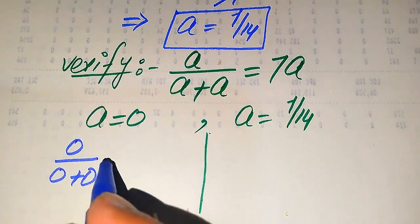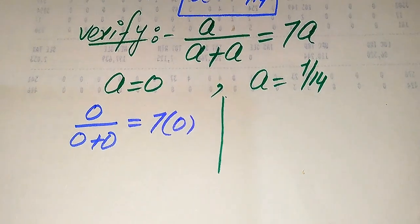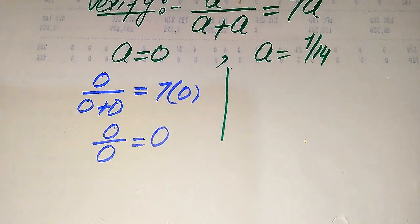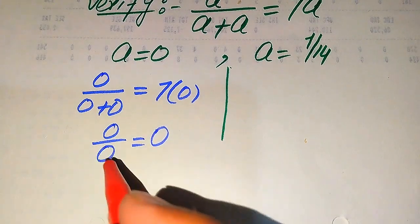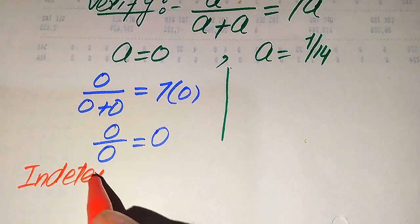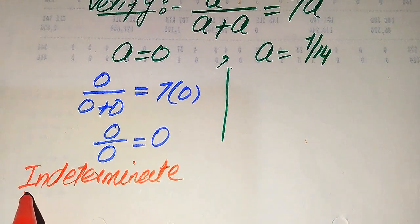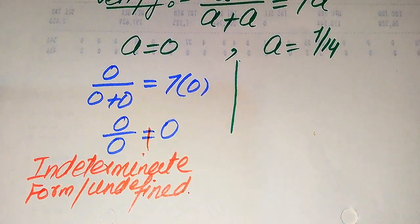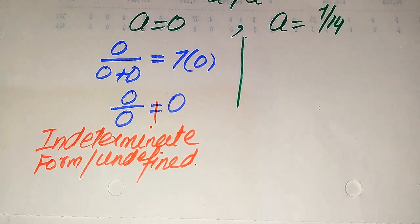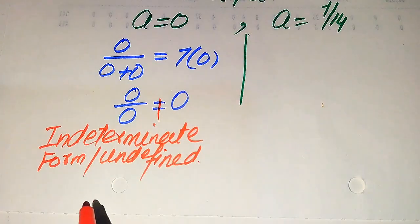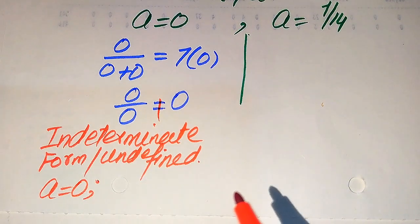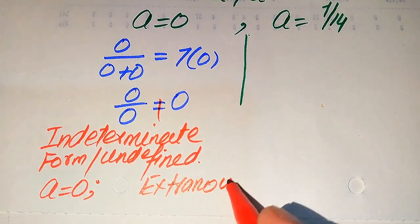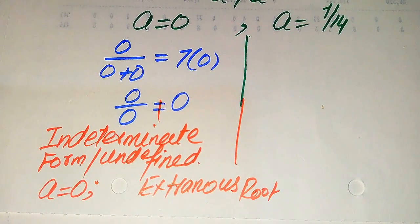Substituting a equals zero, we get zero divided by zero plus zero equals seven times zero, giving us 0/0 equals 0. This 0/0 form is called the indeterminate form — in other words, it is undefined. If the left hand side is undefined, both sides are not equal, which means a equals zero does not satisfy the given equation. Therefore, a equals zero is an extraneous root.